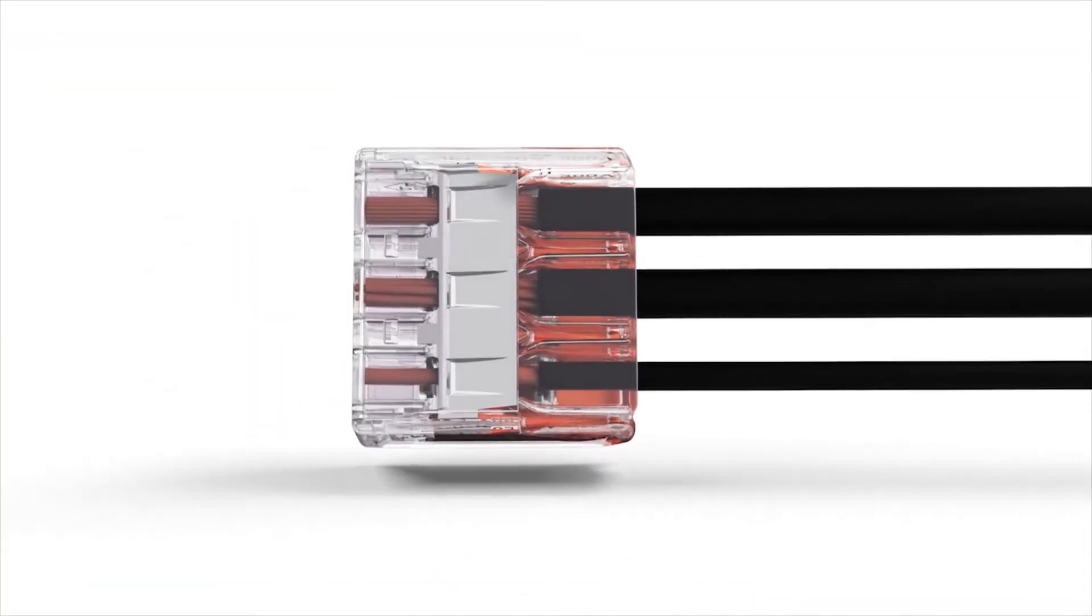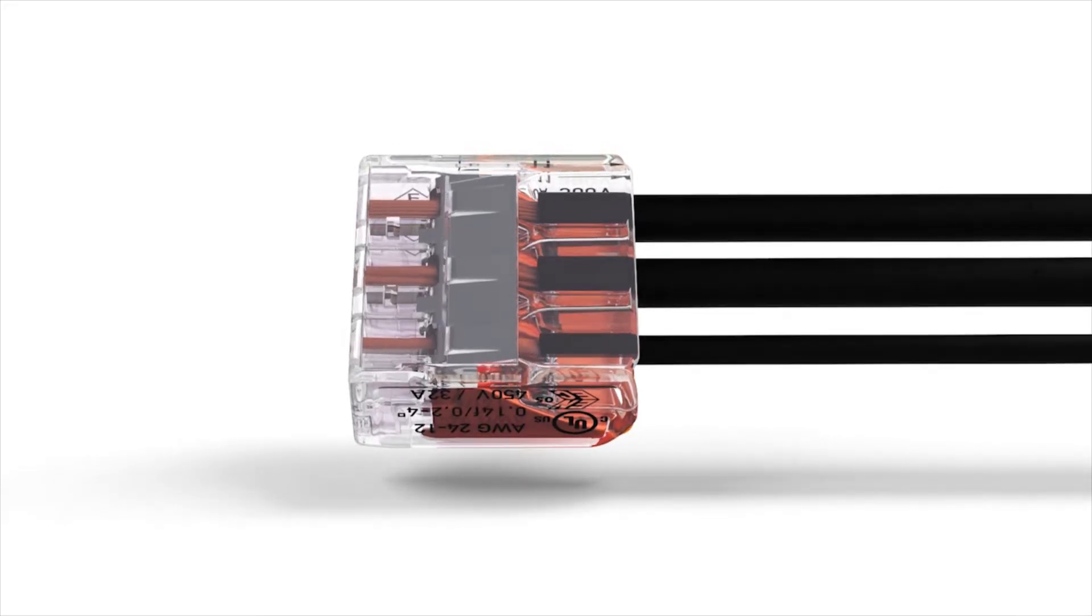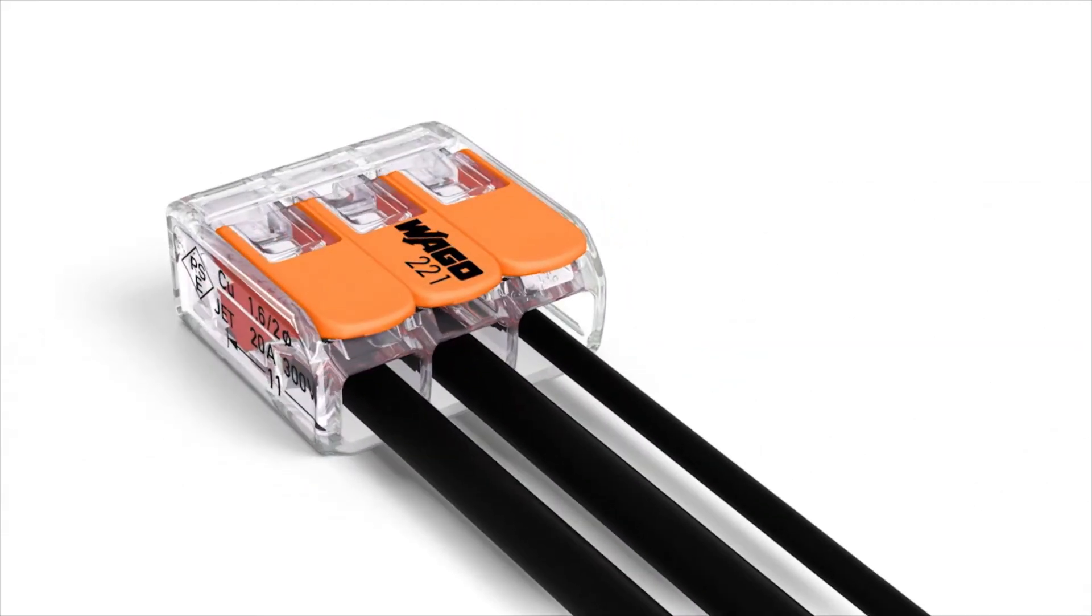The transparent housing permits inspection of the conductor position. It clearly shows if conductors have not been inserted far enough or if they have not been stripped properly. A gas-tight contact point provides a durable and secure connection between the conductor and the current bar.